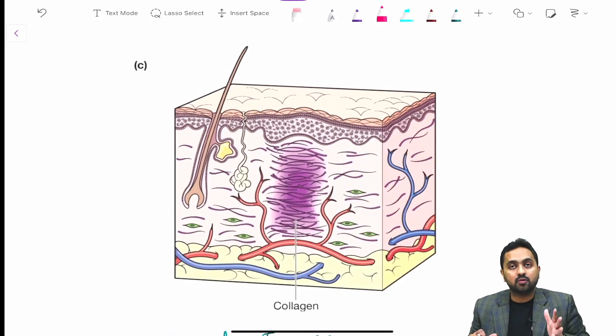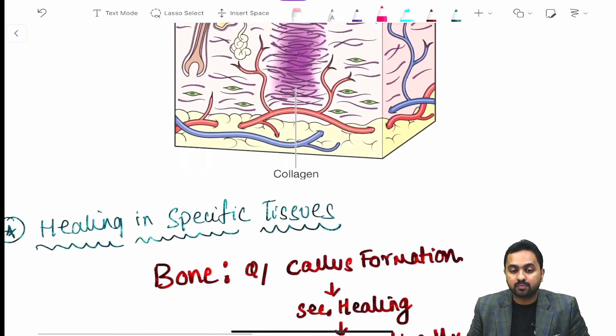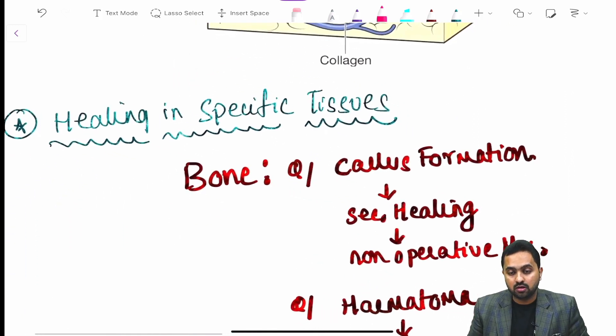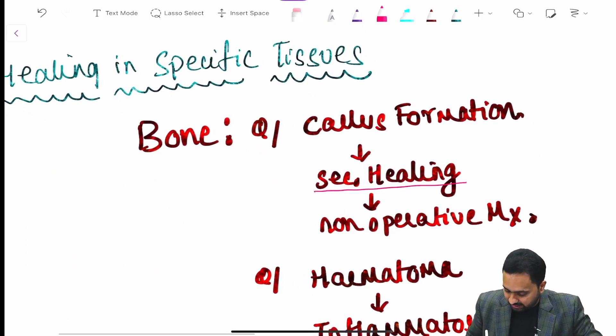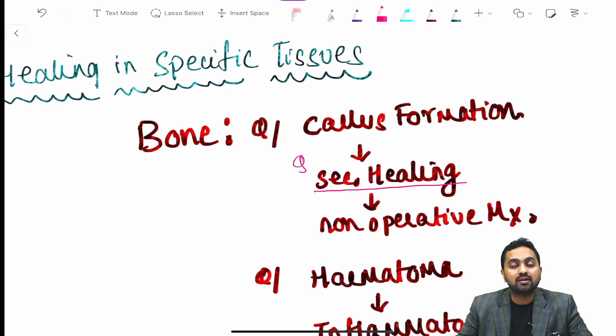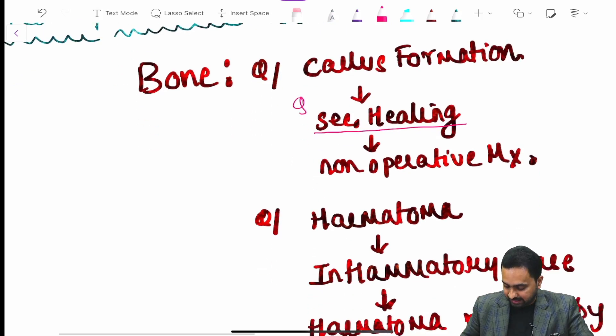This were some important questions and concepts from your wound healing. Now moving down to the next part your healing in some specific tissue. First we discuss regarding the callus formation which is a form of your secondary healing and it mainly occurs when the non-operative management of your fractures are taken.